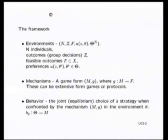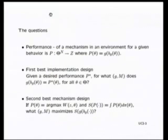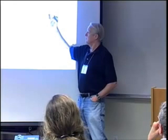Behavior is a joint choice of a strategy — equilibrium usually — when confronted by the mechanism in an environment. When the environment exists and individuals are confronted with the mechanism, they pick that strategy. Given that behavior, given the environments and the mechanism, we can talk about the performance of a mechanism. P of theta is an outcome, and by changing the mechanism, we can change the outcome.